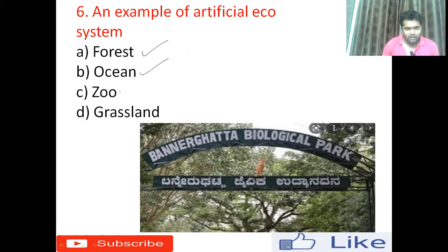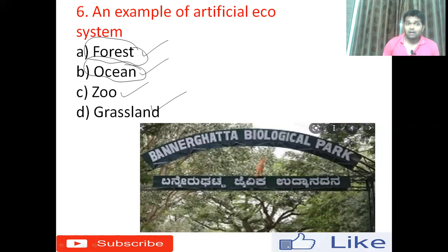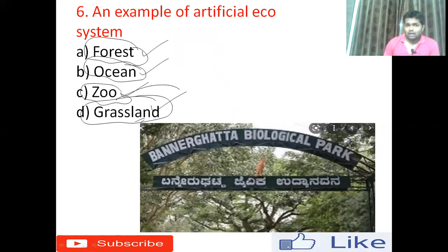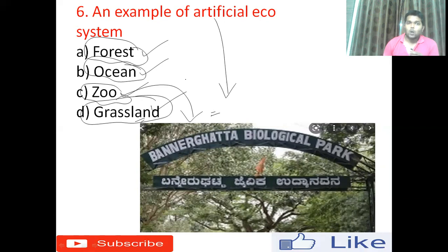Question six: an example of an artificial ecosystem. Option A forest, option B ocean, option C a zoo, option D grassland. Forest, ocean, and grassland are all natural things — they are God-given, not artificial. A zoo is basically part of the forest, but it is made by human beings using our intelligence, scientific knowledge, and technology. I have attached an image of Bannerghatta Biological Park located in Bangalore — a man-made park. So the right answer is option C — zoo.